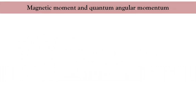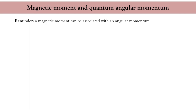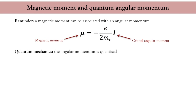From the previous discussion, a magnetic moment can be associated with an angular momentum. What we learn from quantum mechanics is that the angular momentum is quantized. If you apply wave mechanics to a hydrogen atom, the magnitude of the orbital magnetic moment is the square root of L(L+1) times h-bar, where L is called the azimuthal quantum number.